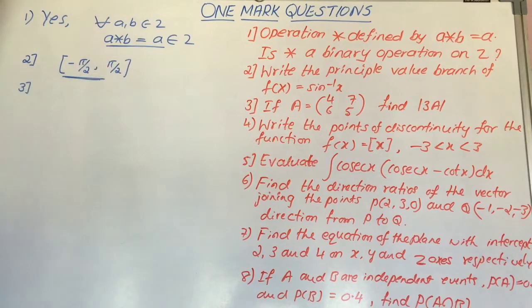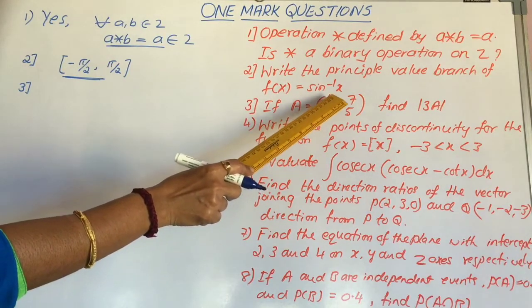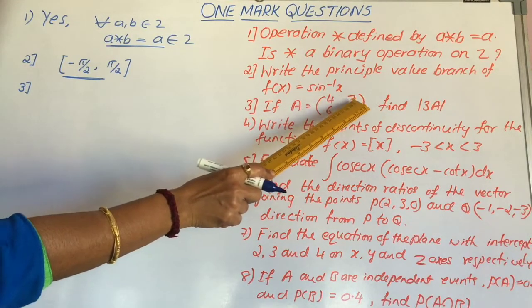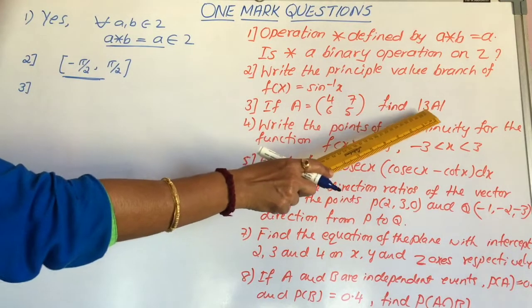Now move on to question 3. If a is equal to a matrix containing 4, 7, 6, 5, find determinant 3a.